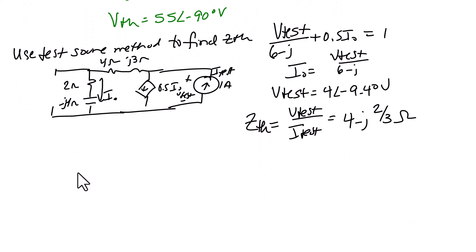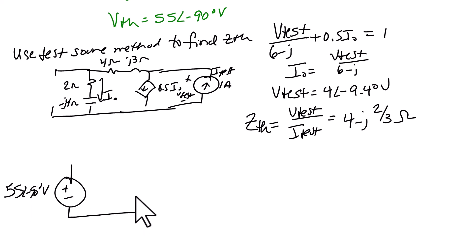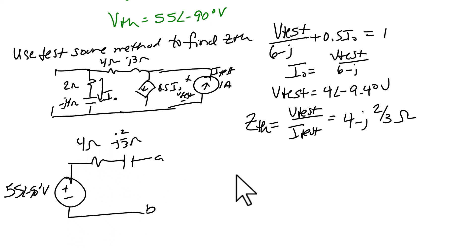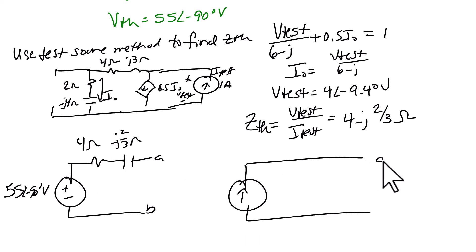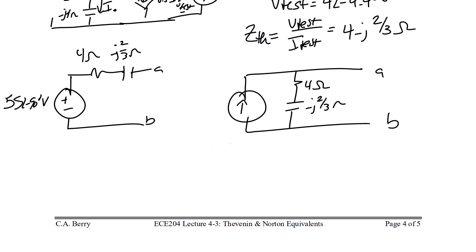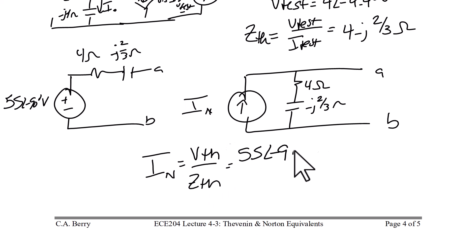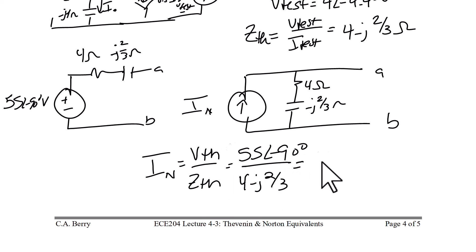Drawing the Thevenin equivalent circuit: the voltage source is 55 angle negative 90 degrees and the impedance is a 4 ohm resistor in series with a negative J(2/3) ohm capacitor. The Norton equivalent has the same impedance of 4 minus J(2/3) ohms, and I Norton = V Thevenin / Z Thevenin = 55 angle negative 90 degrees divided by 4 minus J(2/3), which equals 12.33 angle negative 80.54 degrees amps.